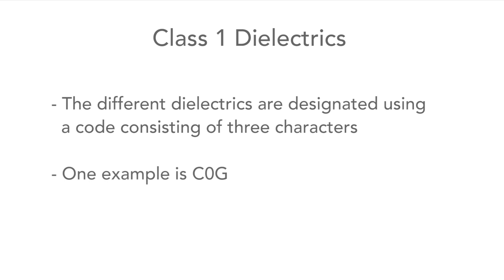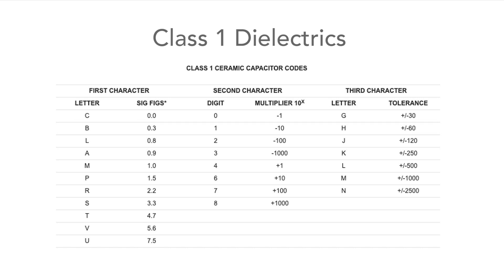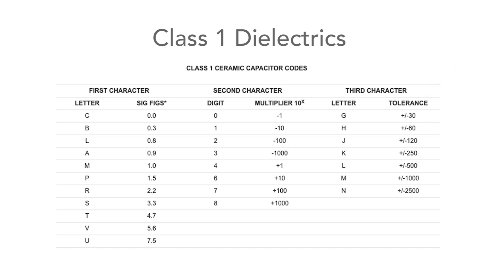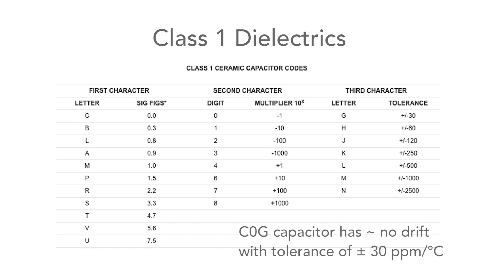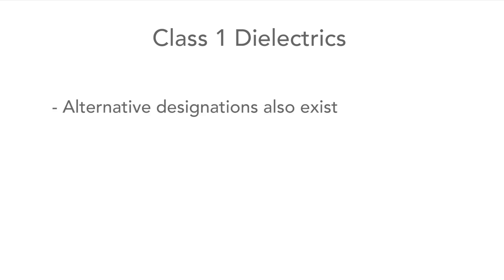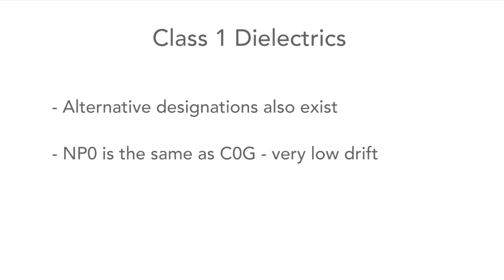We've probably all heard of C0G or COG capacitors. Looking at the designation table, the first character is a letter which gives the significant figures for the temperature coefficient in parts per million per degree Celsius. The second character is numeric and gives the multiplier, and the third character is a letter giving the tolerance for the temperature coefficient. So a COG capacitor will have around zero drift but with an error of plus and minus 30 parts per million per degree Celsius, which is pretty low. C0G or COG capacitors are also referred to as NP0, meaning negative positive zero — in other words no drift, or in reality low drift.